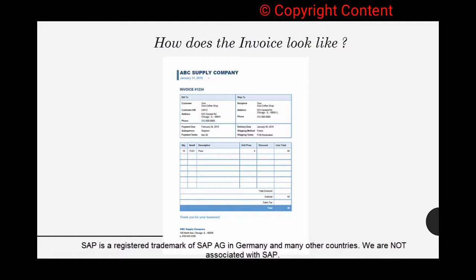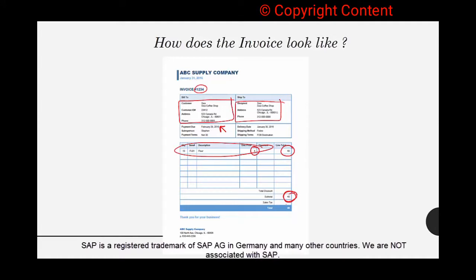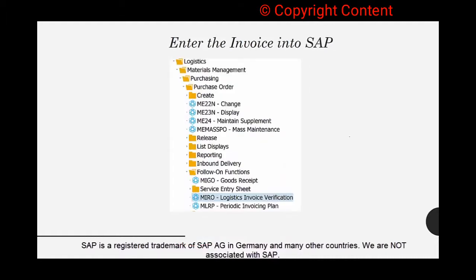So how does an invoice look? It'll have a date and an invoice number, who is being billed, where the goods were shipped, when payment is due, what materials in what quantities, and the total. For example, at four dollars per unit, if the quantity is 10, the total is 40. It also tells you where to send the check. This is a simplified version of an invoice. Where do you enter an invoice?